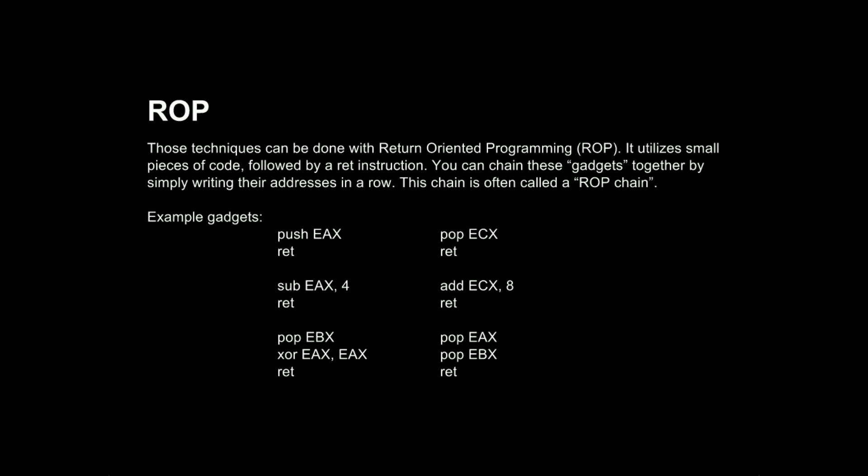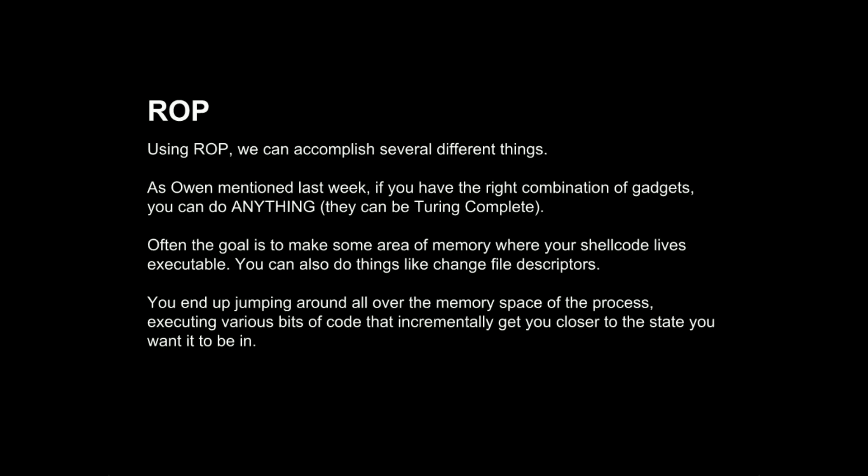Another thing Owen talked about last week was that each gadget fits into a specific class. For instance, there might be a class of gadgets that increments a register — a bunch of different gadgets that do exactly the same thing. You only need one of them as long as the address doesn't contain null bytes or whatever bad characters you want to avoid. Once you have one from all the available categories — there are like 40-something categories you need — it's actually a Turing-complete language.